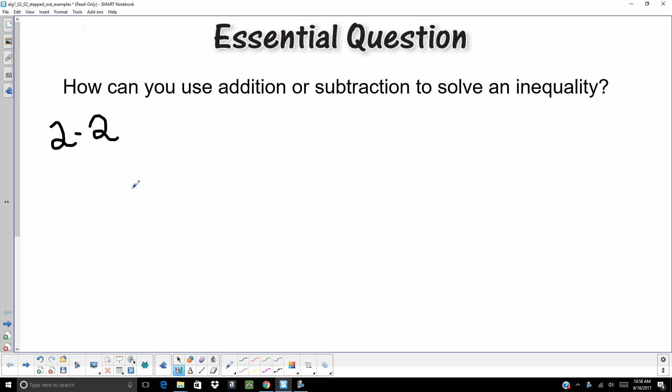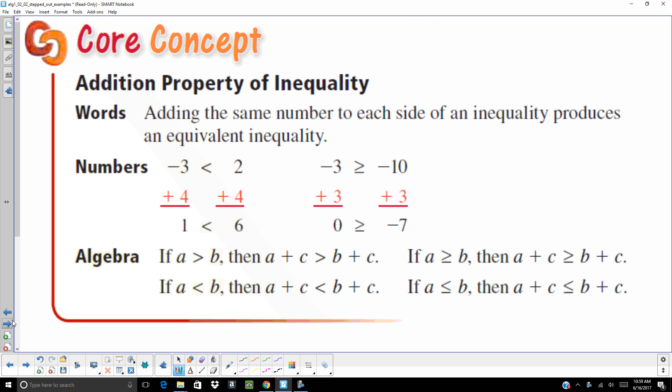All right, today we are doing Chapter 2 Section 2 in Algebra 1, and our essential question is how can you use addition or subtraction to solve an inequality. I'm going to probably go through some of these examples pretty quickly, but you're always welcome to hit pause. This is pretty much exactly the same thing as solving an equation, but instead of having an equal sign we've got a greater than or less than sign. So this is the same property, but instead of addition property of equality, it's the addition property of inequality.